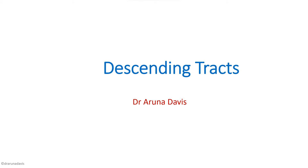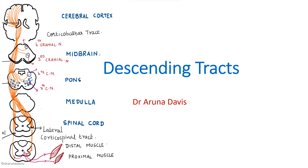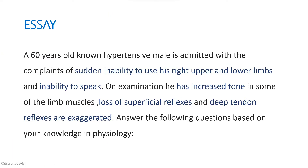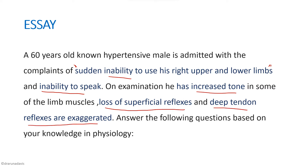In this video we are going to discuss the descending tracts, mainly the corticospinal tract, which is the most important among all the descending tracts. First, let's see a sample essay question, because this is usually asked as an essay question. A 60-year-old hypertensive male is admitted with complaints of sudden inability to use his right upper and lower limb, inability to speak, and on examination he has increased tone in some limb muscles, loss of superficial reflexes, and exaggerated deep tendon reflexes.